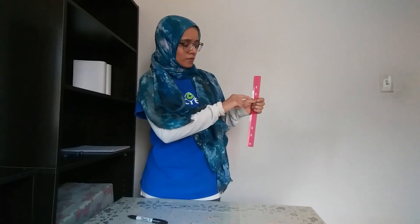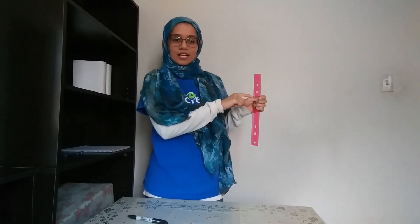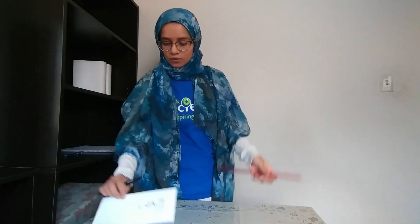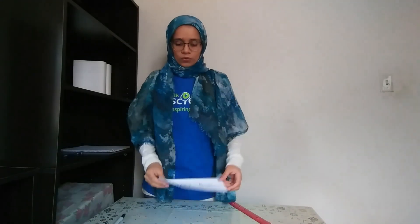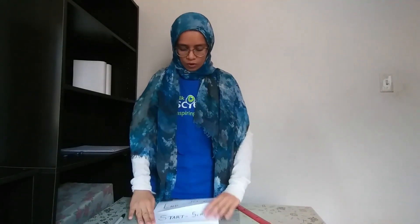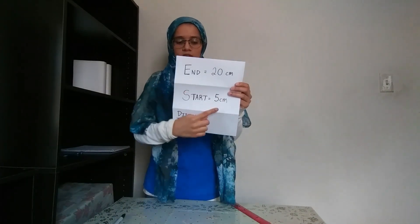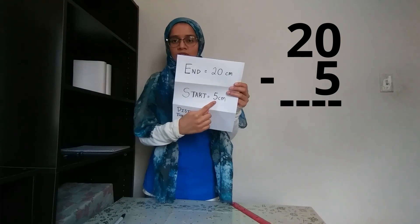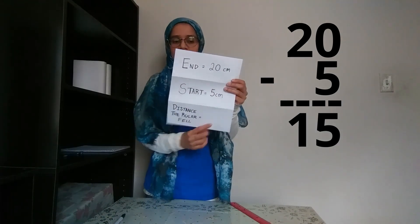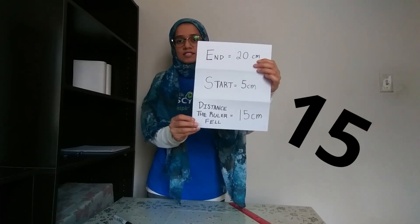So now I'm going to read the new measurement that's at the top of my thumb. For me, that's 20 centimeters, so I'm going to write that down — I've ended at 20 centimeters. Now to get the distance that the ruler fell, what we need to do is subtract how much we ended off at by how much we started by. So we do 20 minus 5 in my case, and I end up with 15 centimeters. So the distance the ruler fell for me is 15 centimeters.